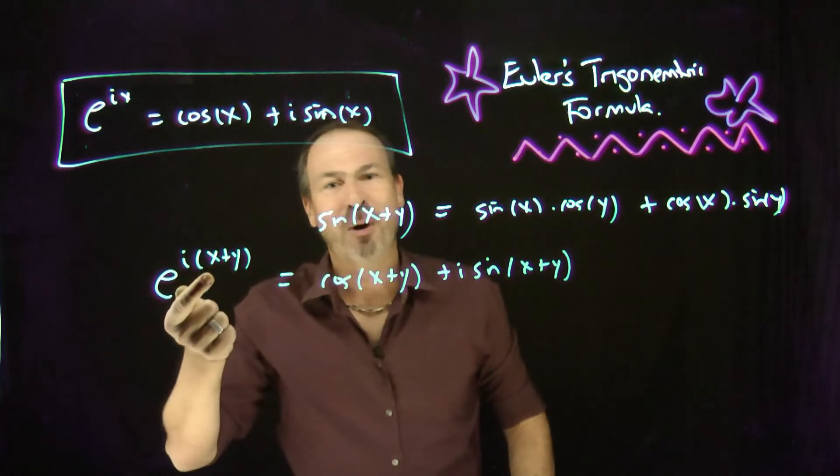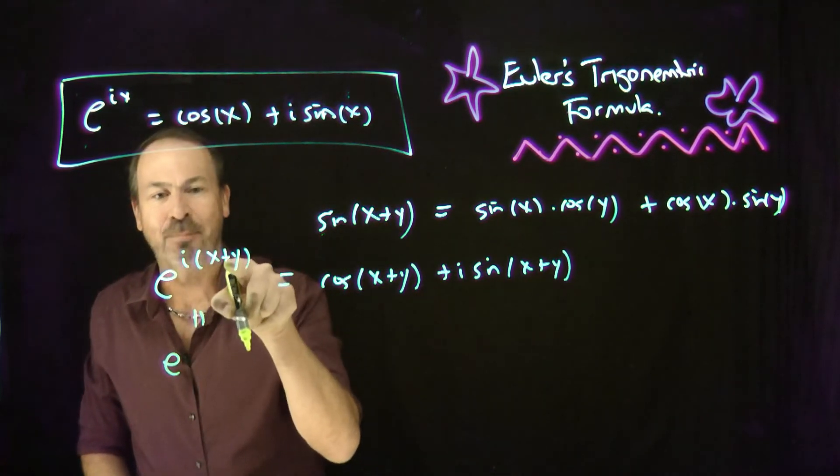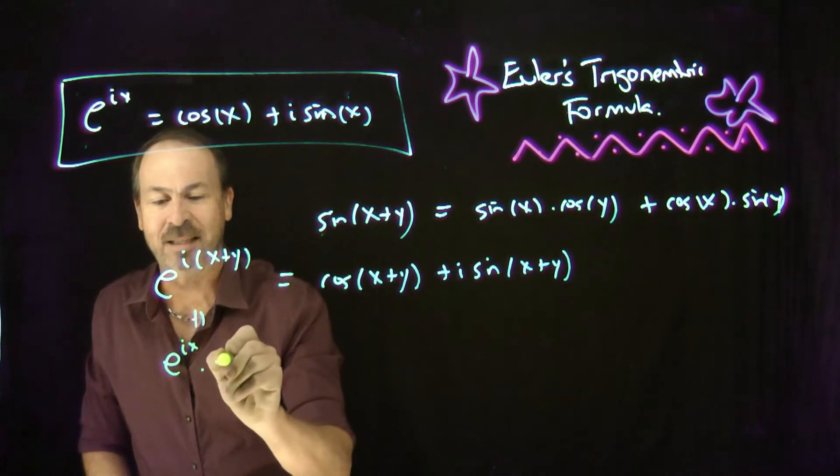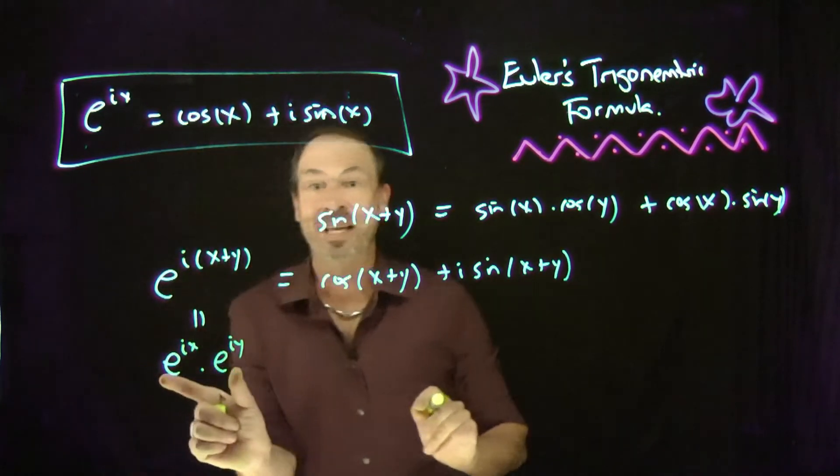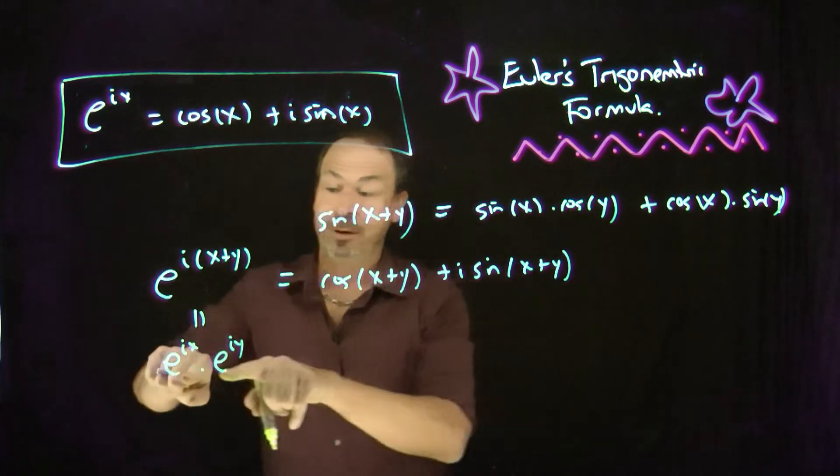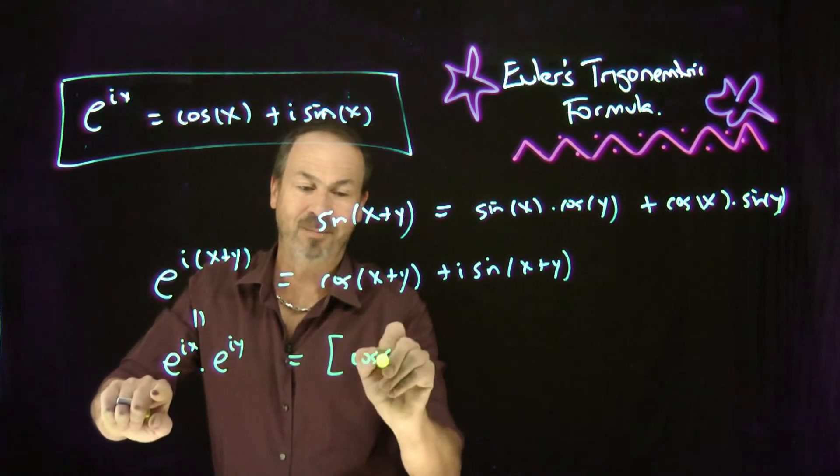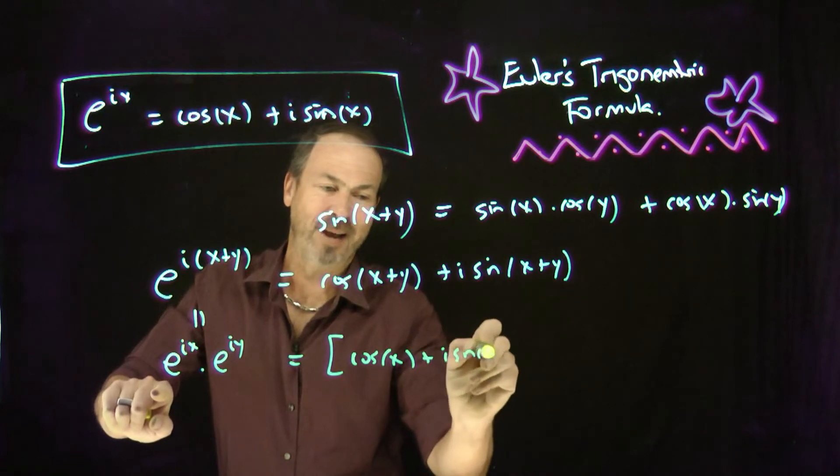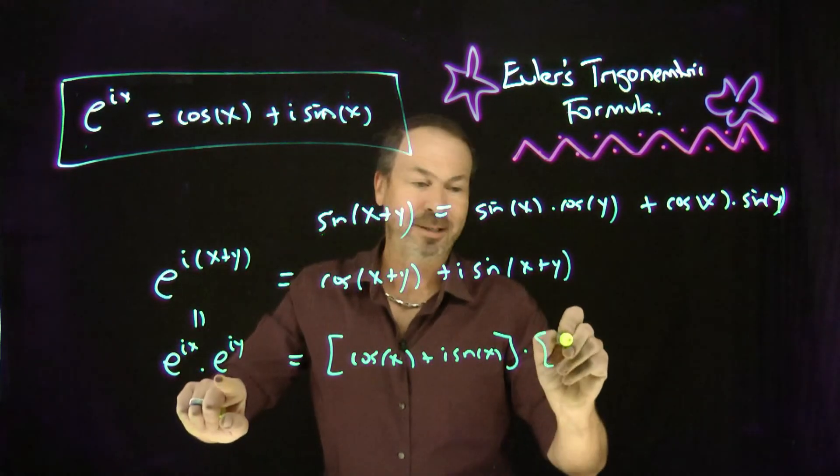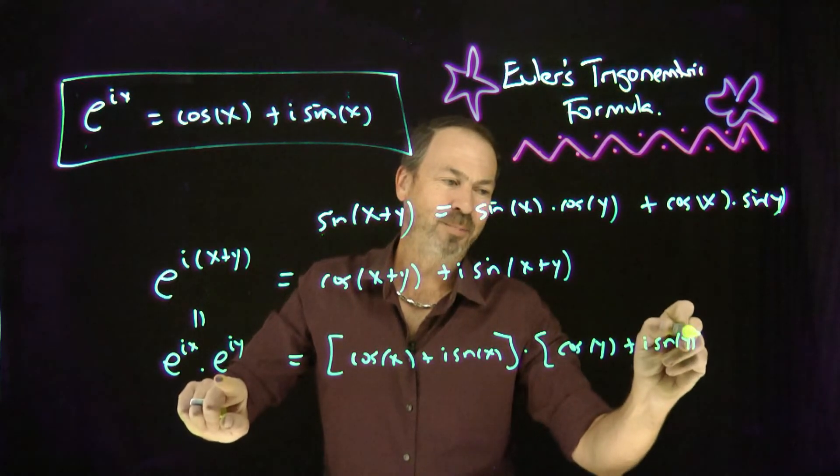But basic exponent rules - this is lovely. Exponent rules tell me, this is really just e to the ix plus iy. It's really e to the ix times e to the iy. Because that's how exponents work. Basic exponent rules. Fabulous. What I love about that, e to the ix is its own little formula. It is cos x plus i sine of x times e to the iy - its own little formula: cos y plus i sine of y. Beautiful. There it is.